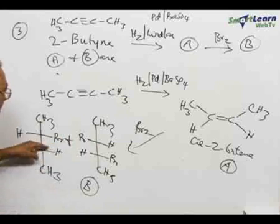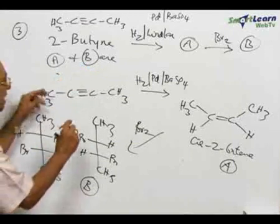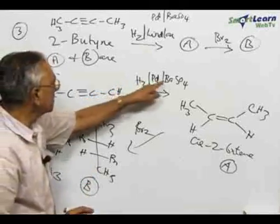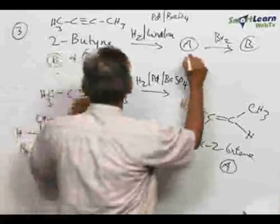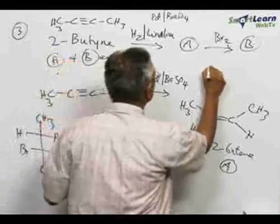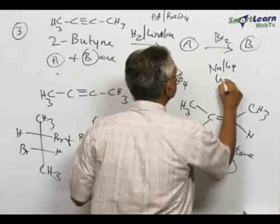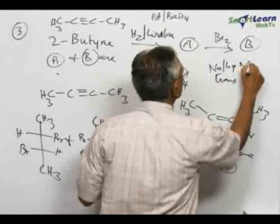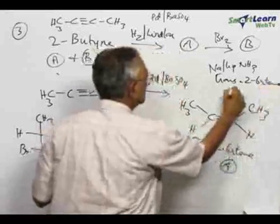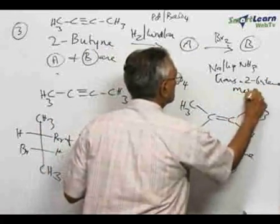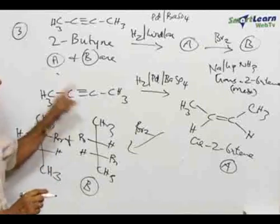So this is what is known as a DL mixture. So this is the choice given in C. Normally, this reduction by means of palladium and barium sulfate will give rise to cis-2-butyne, whereas reduction of the same compound 2-butyne by means of sodium and liquid ammonia will give trans-2-butyne. The trans-2-butyne on bromination will give rise to a meso compound. So the answer for this question is C.